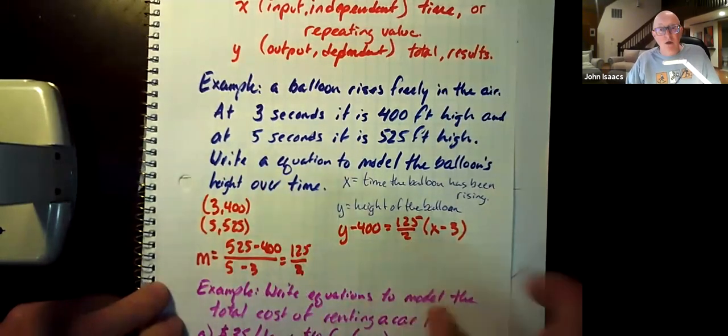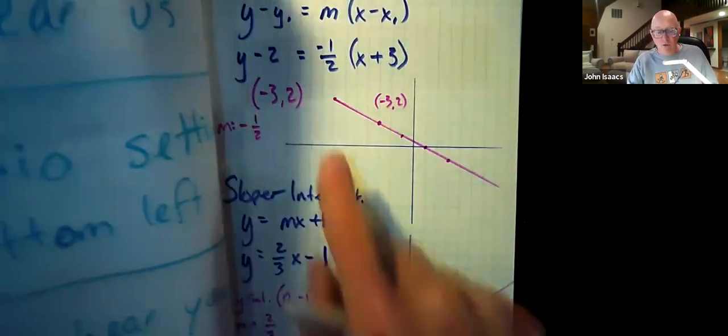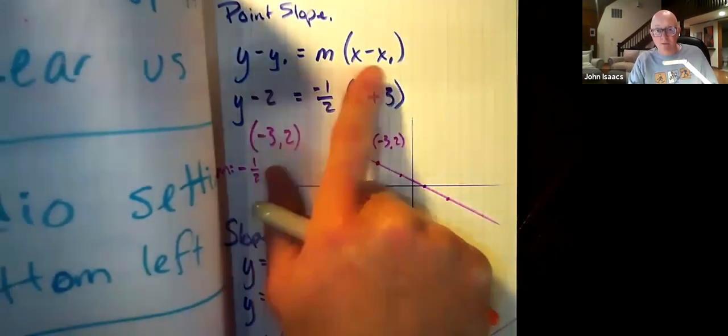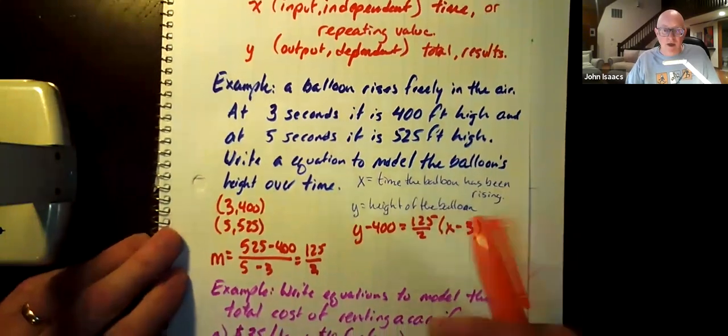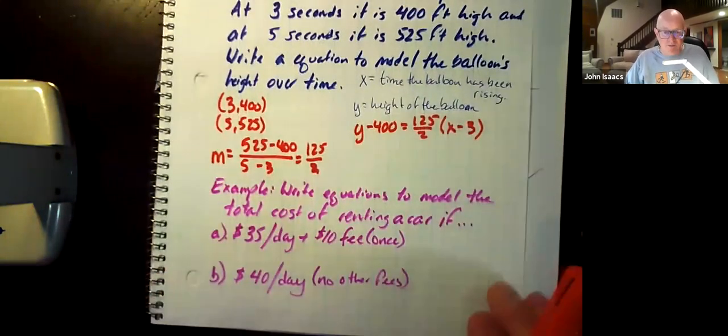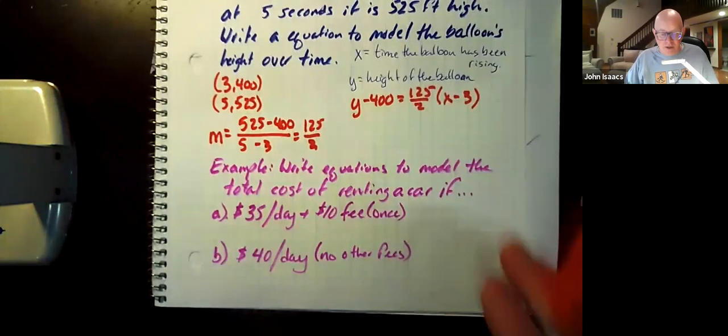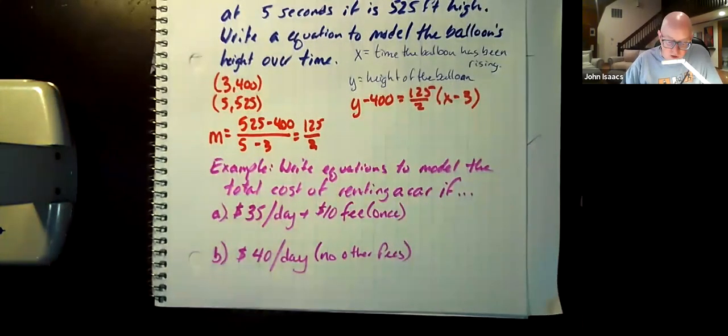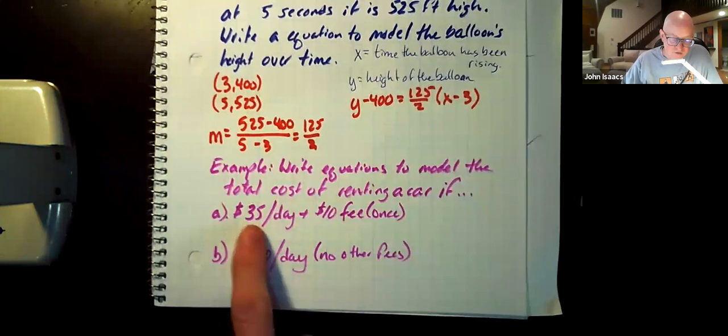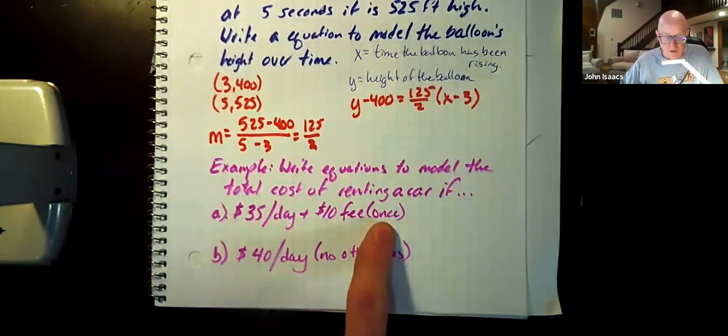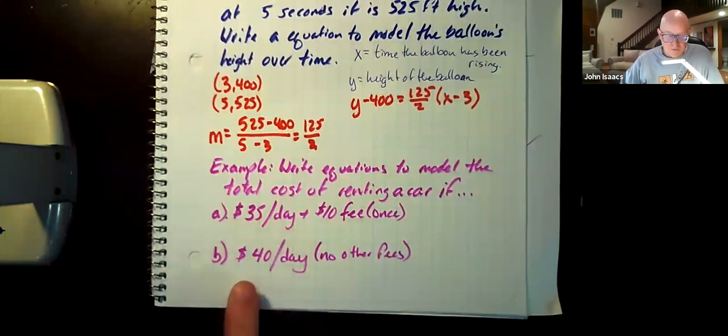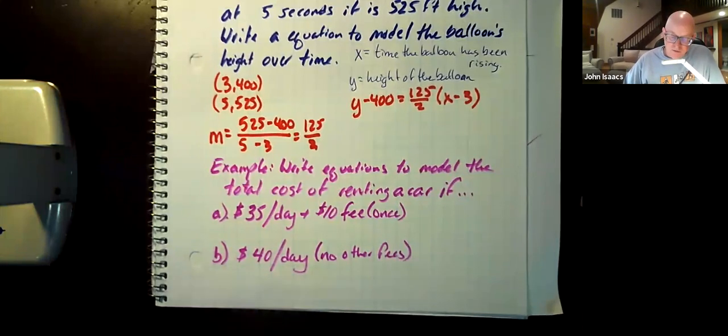So that's modeling an equation from a word problem. In this case, we used point slope, the point slope style equation. We had points, we figured out a slope from those points, and we wrote an equation. The second problem here, the example says, write an equation to model the total cost of renting a car if the car costs $35 per day and has a fee of $10 that's paid once. Or a different car costs $40 per day and has no other fees. So again, we have to do our variables.